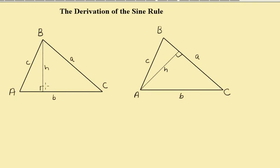We can see in this triangle that H over C is equal to the sine of angle A, which of course implies that H equals C sine A.